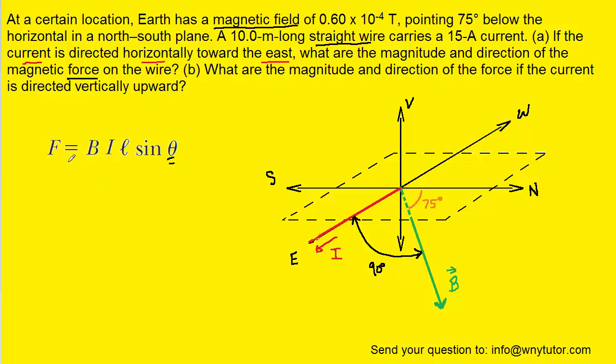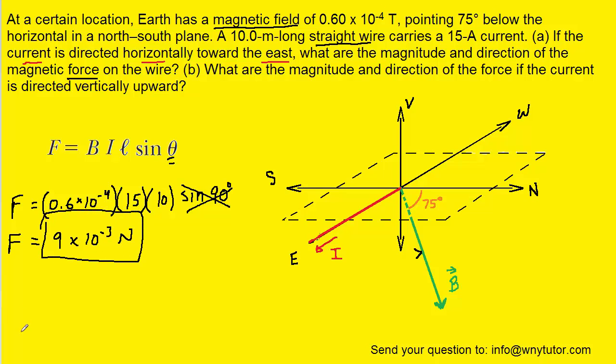We are now ready to plug into the formula for magnetic field, current, length, and the 90 degree angle. The sine of 90 degrees is 1, so this basically cancels out. When you compute this you should get approximately 9 times 10 to the minus 3 newtons as the correct answer for the magnitude of the force.